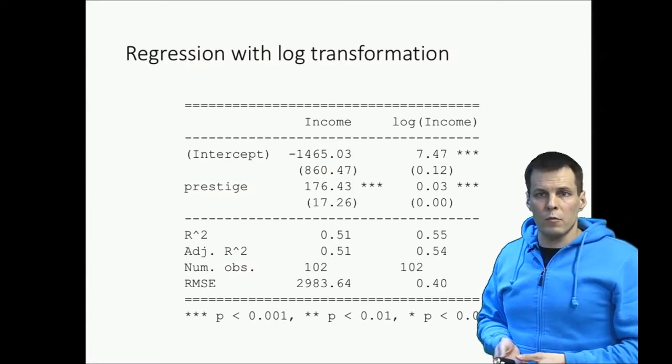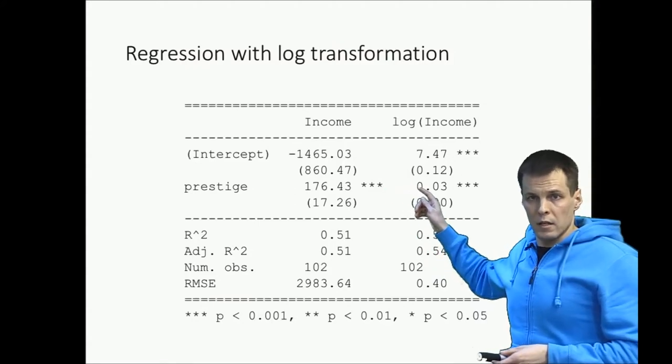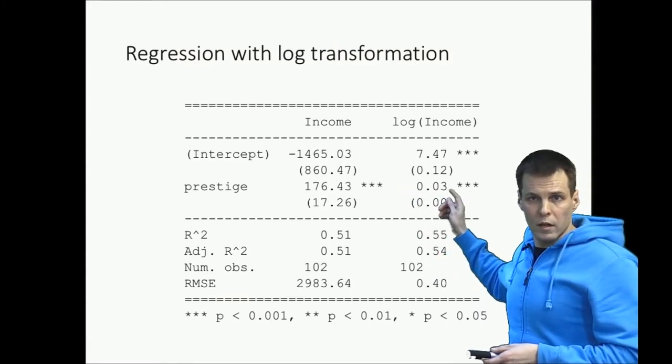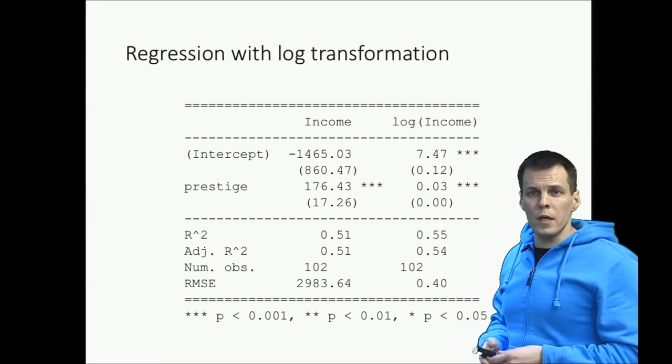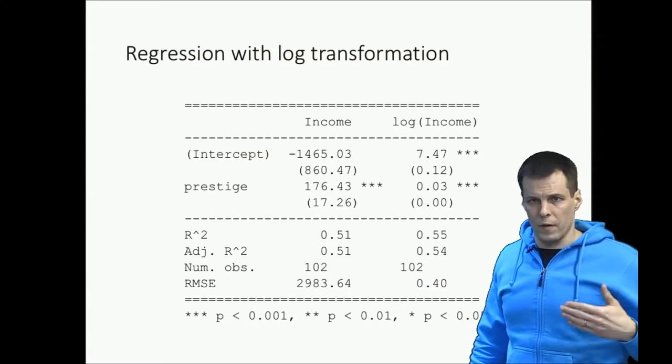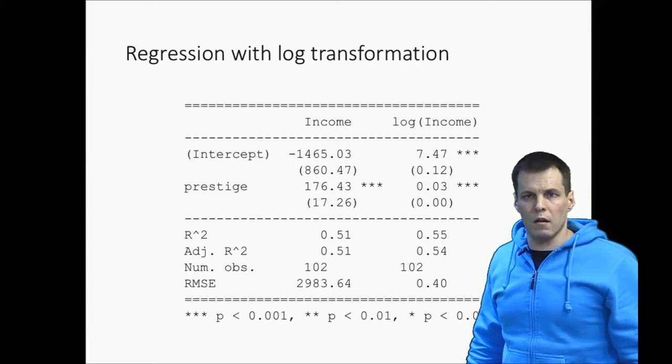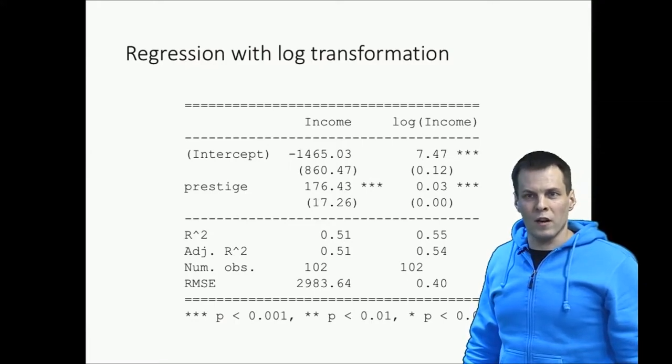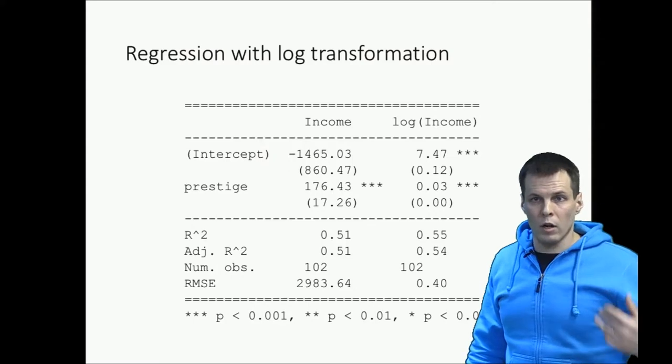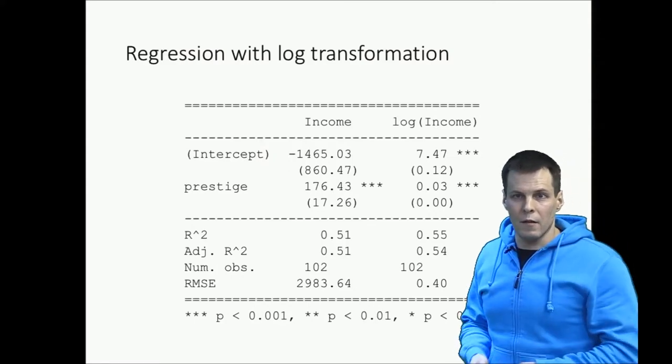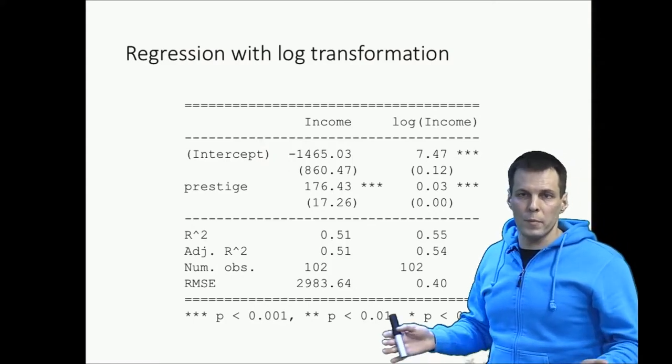So how do we interpret? What does this 0.03 increase in the log of revenue, log of income mean? For most people, the metric of log of income doesn't have any meaning. Someone tells me that the logarithm of your income will increase by 0.01. I know what it means because I've done this. I've read my statistics books. Most people don't.